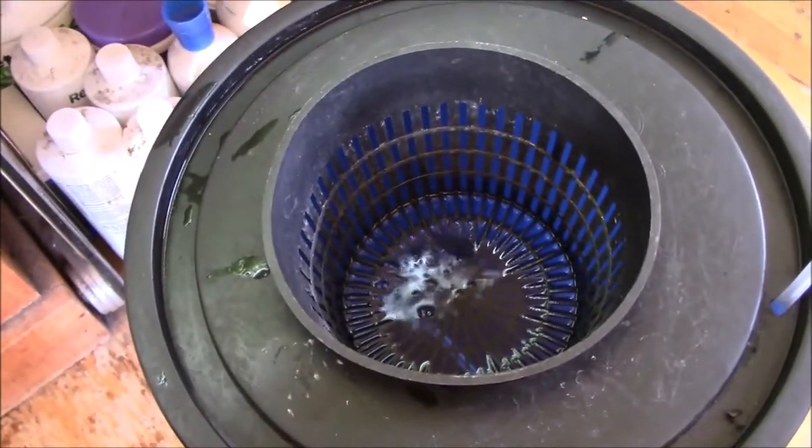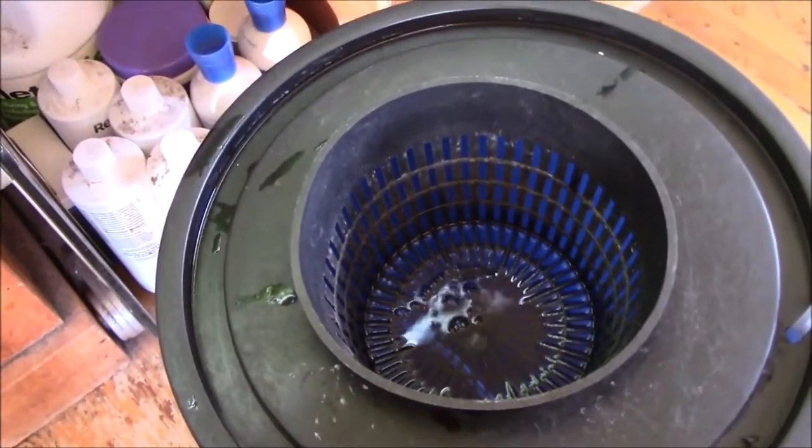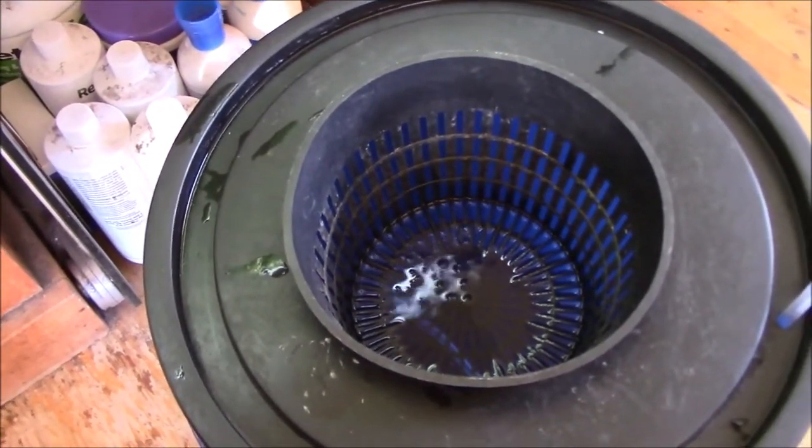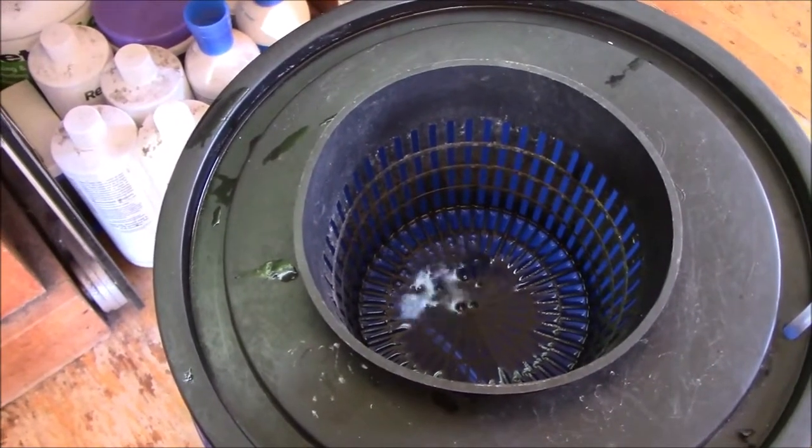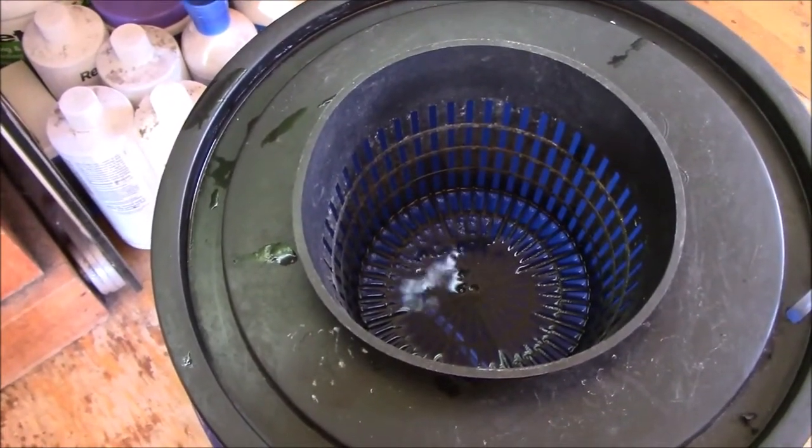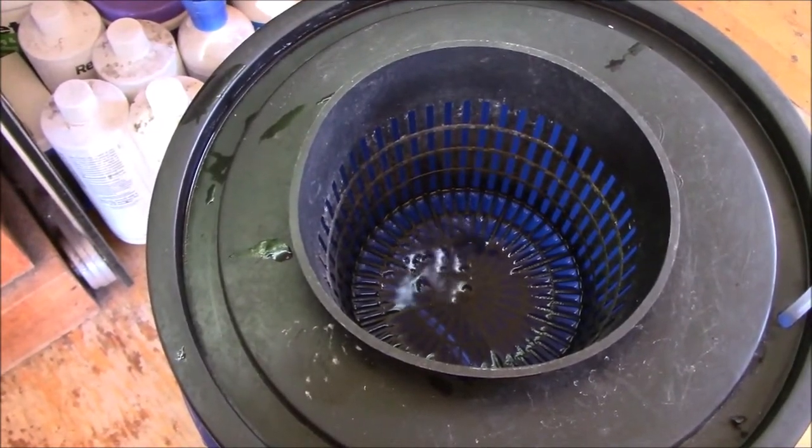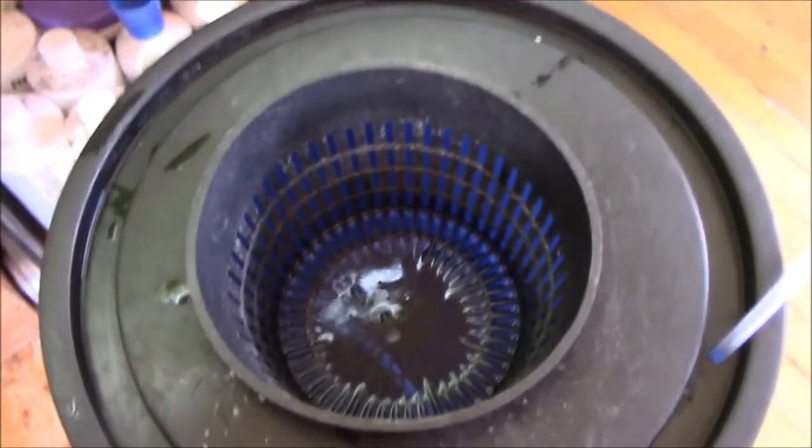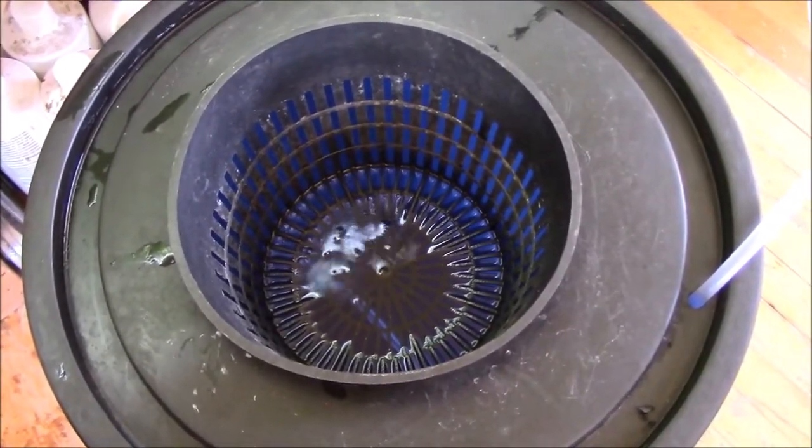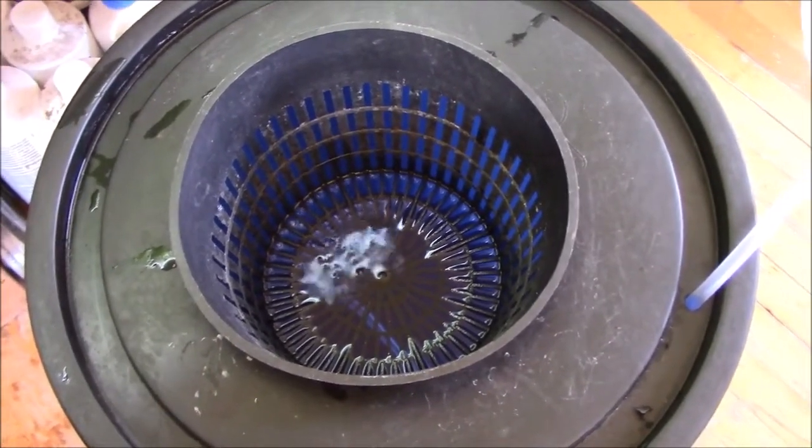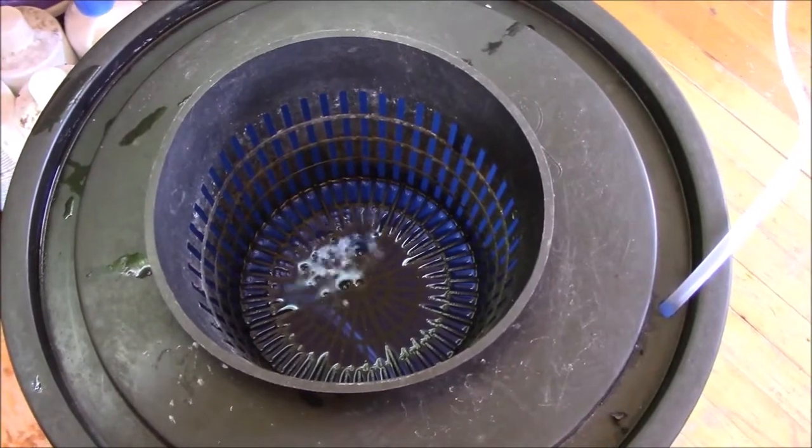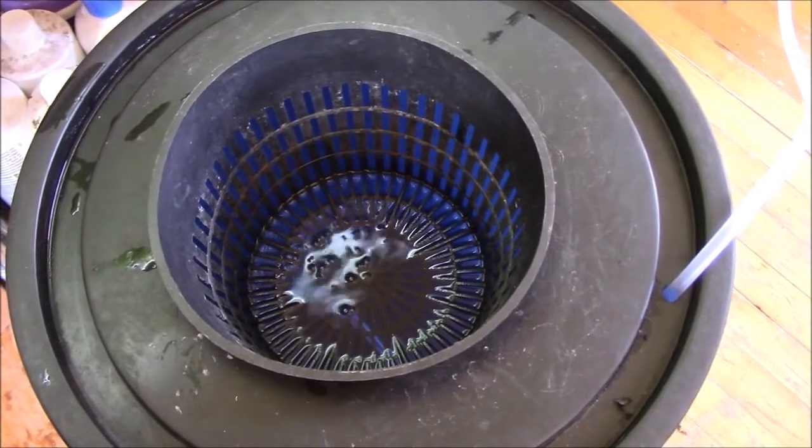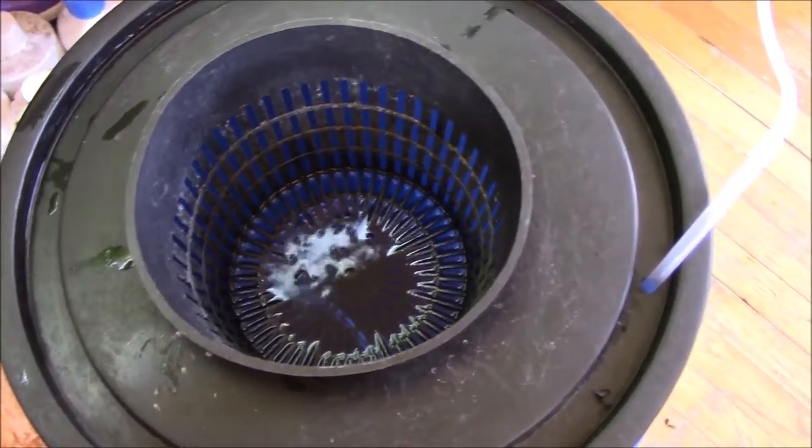You can buy these lids with a built-in net pot. You know they have them on Amazon, you could probably get them at any hydro store. I just did it this way because I had the black lid. Your buckets, you don't want them to be clear. Or you know, if you have a white one you can paint it or you can wrap it with something like black plastic because you don't want light to get into the reservoir.